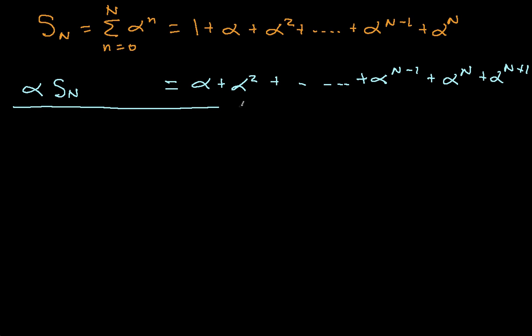So what I'm going to do is take the second equation that I just wrote down and subtract it from the first equation. I'll take the left-hand sides and subtract them. When I do that, I get S_N minus alpha S_N. Then I've got the right-hand sides. I've got 1, and there's nothing down here that is the same as 1, so I'll have 1. Now you'll notice I'll have alpha minus alpha, alpha squared minus alpha squared, and so on. Alpha N minus 1 minus alpha N minus 1, alpha N minus alpha N. So I just end up with 1 minus alpha to the N plus 1. All these other terms cancel when I subtract the second equation from the first.